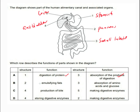Option B says: does the pancreas do emulsification of fats? No — it is actually bile that does emulsification of fats. Option B also mentions absorption of amino acids and glucose — well, this can be true, but the full option B is not correct.